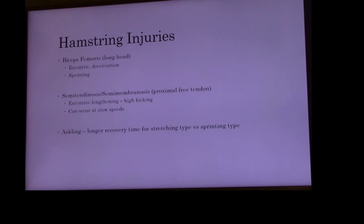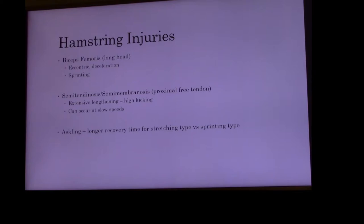The two main hamstring injuries we see are the biceps femoris and the semitendinosus/semimembranosus. Carl Askling, a researcher who's done a ton of work on hamstrings, identified two types: the sprinting type, which is consistently the biceps femoris long head, and the stretch type, which is consistently the semitendinosus or medial hamstring. Sprinting injuries tend to heal quicker. Stretch injuries — which don't have to be rapid, they can be a slow progressive stretch like in ballet — seem to take longer.